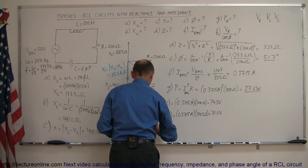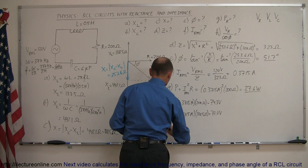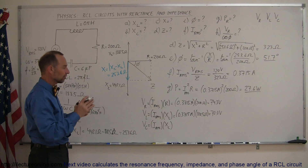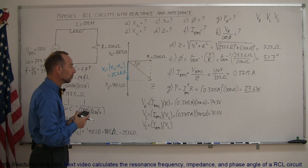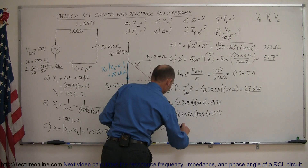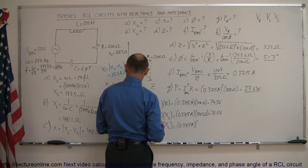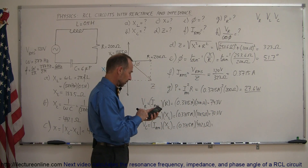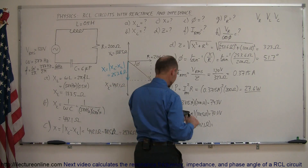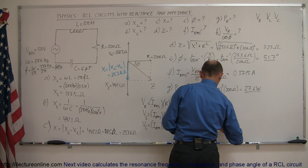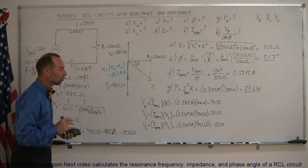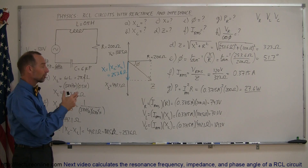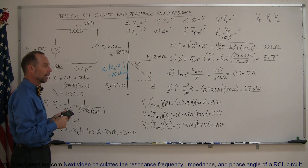Finally, the voltage across the capacitor equals IRMS times X sub C: 0.3715 amps times 442.1 ohms gives 164.2 volts. Note that this isn't a constant voltage — since it's a varying voltage circuit, these represent the maximum voltages at any point during the cycle. Notice that when you add those three together, you do not get 120 volts, which makes sense because the voltage drops across these three devices occur at different times in the cycle — they're out of phase.